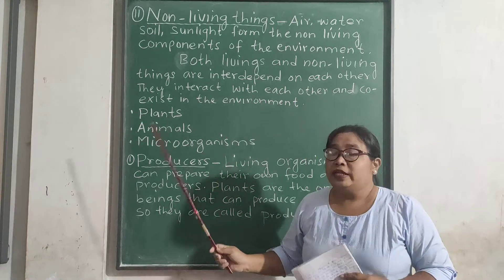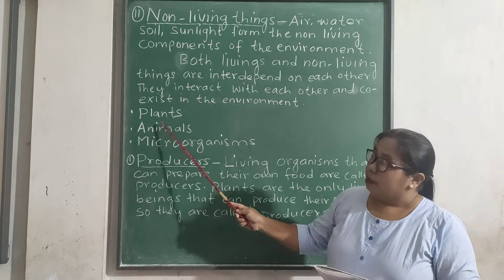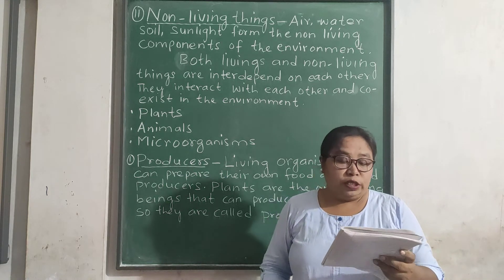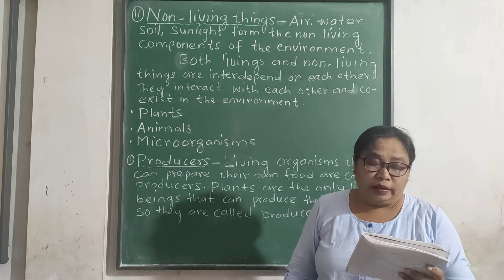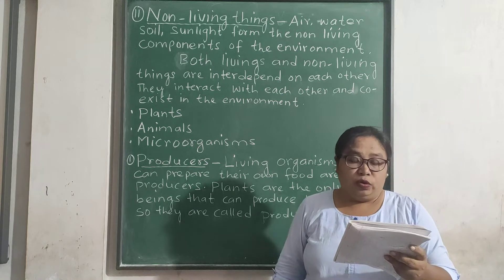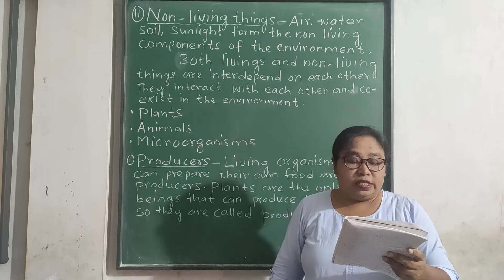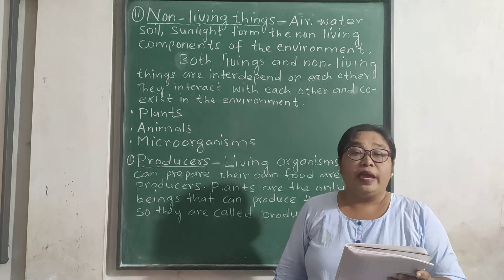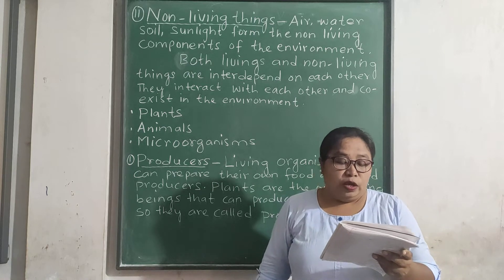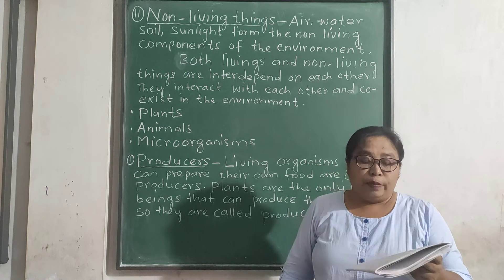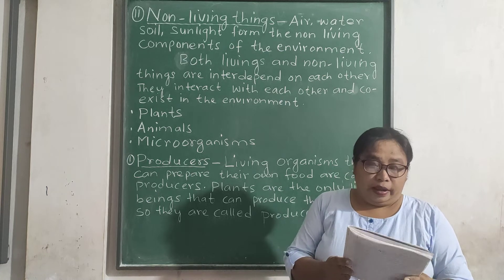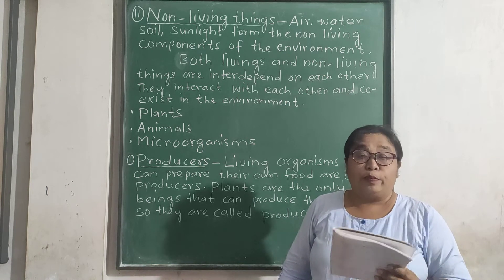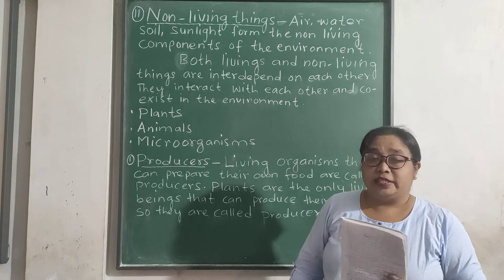Now let us discuss on plants. Plants are a very important part of our environment and they play a crucial role. They give us oxygen. They make their own food using sunlight, carbon dioxide from the air and water from the soil by the process of photosynthesis.